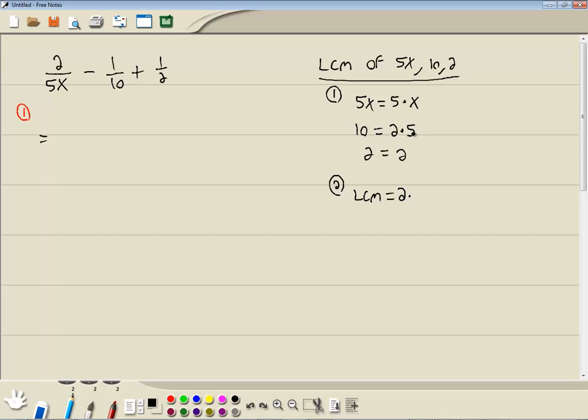Now I go to my 5. I'm looking for the greatest number of 5's on any single line. 1 here, 1 here, none here, so the greatest number of 5's on any single line is 1.